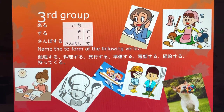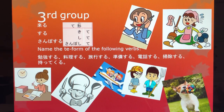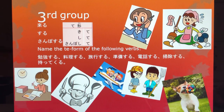Let's practice with other suru verbs. 勉強する (benkyou suru, to study) → 勉強して (benkyou shite). For example, before your exam: 試験の前に 勉強して ください. 料理する (ryouri suru, to cook) → 料理して (ryouri shite). 旅行する (ryokou suru, to go for a trip/travel) → 旅行して. 準備する (jubi suru, to prepare) → 準備して. 電話する (denwa suru, to call/phone) → 電話して. 掃除する (souji suru, to clean up) → 掃除して.